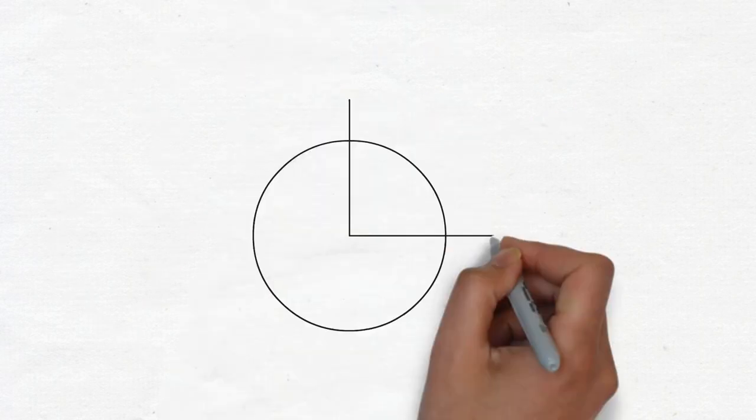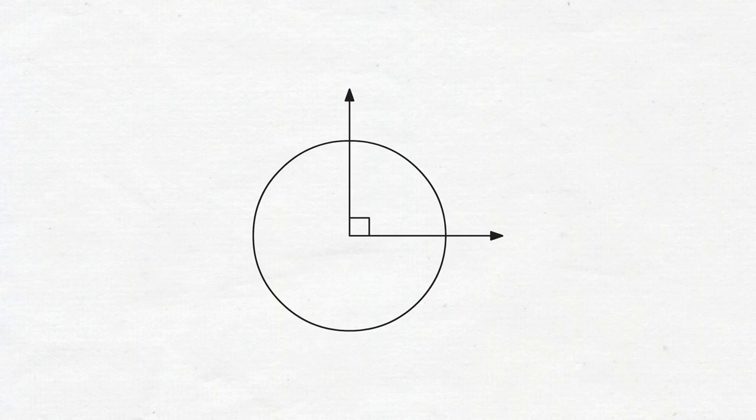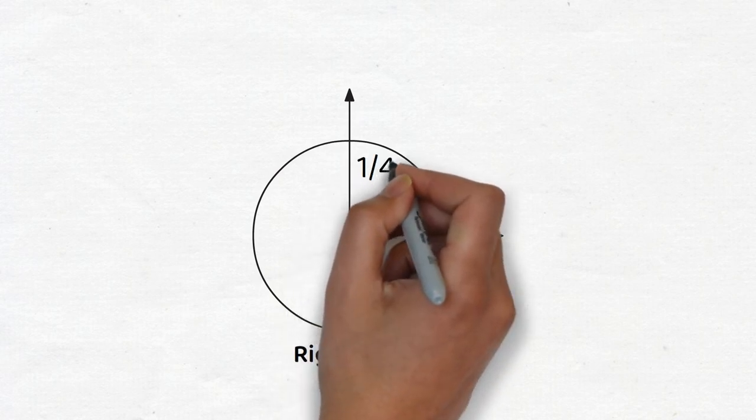There are two important angles that come up in geometry. The first is called a right angle. This is an angle formed by two rays which form a pizza slice that is one-fourth of the full circle.